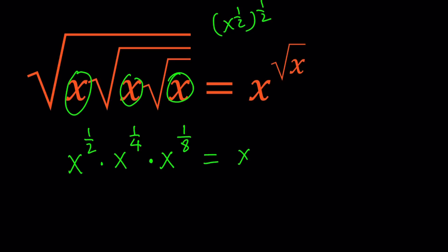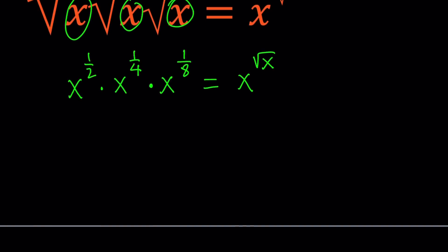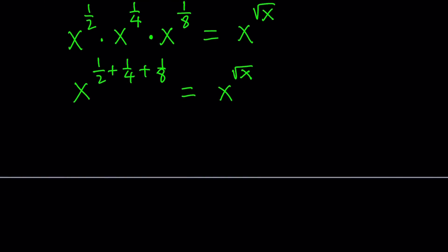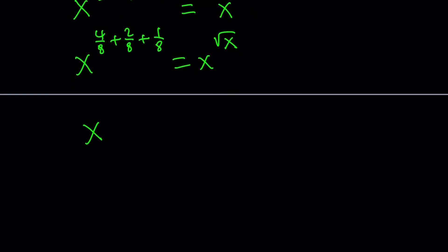On the right-hand side, I can just leave it as x to the power square root of x. Now we have the same base on both sides, so we can add the exponents on the left-hand side. This gives us x to the power one-half plus one-fourth plus one-eighth, equal to x to the power square root of x. Making a common denominator of eight, this becomes x to the power four-eighths plus two-eighths plus one-eighth, which gives x to the power seven over eight equals x to the power square root of x.